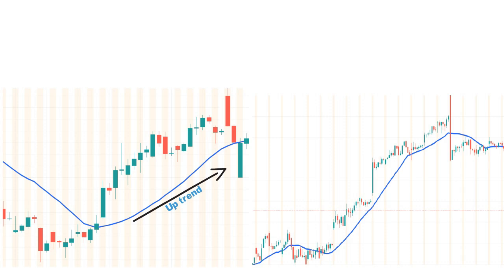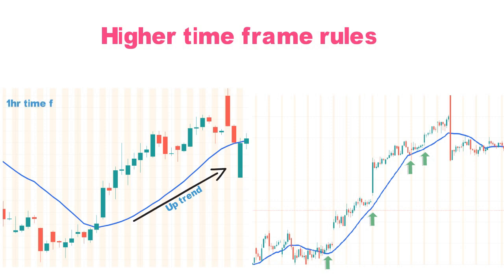For intraday, go to the 15-minute time frame and wait for the price to come to an important support level — such as RSI 40, Fibonacci retracement level, 20 SMA support, or trend line support — then take entry with price confirmation. This is the higher time frame rule: check trend on the higher time frame and take trade on the lower time frame. For short term, daily is the higher time frame and 4-hour is for entry. For long term, monthly is the higher time frame and weekly is for entry.